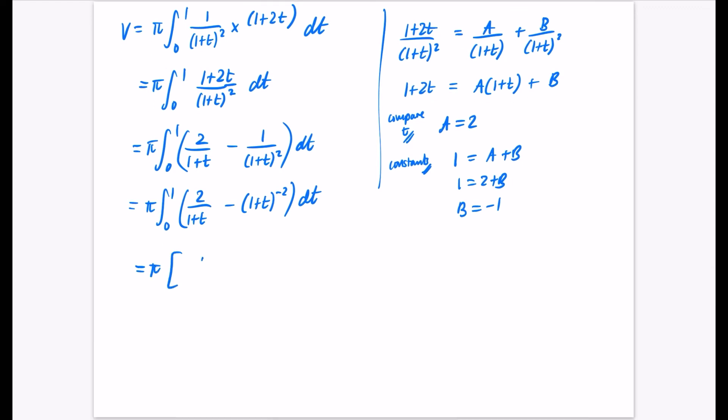So I'm going to do the integration. This is going to be ln(1+t) scaled by that 2. And then this one I'm going to increase the power to minus 1. So it becomes plus (1+t) to the power of minus 1. I don't need to do any scaling because in both of these cases there was nothing in front of the t. And that's between 0 and 1.